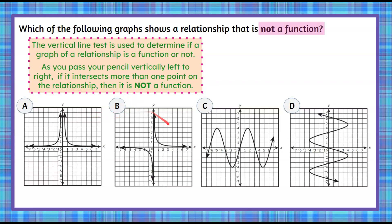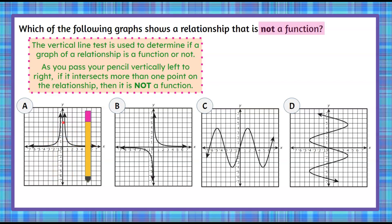Each one of these four graphs shows a relationship between x and y, and one of them is not a function. We're going to start with our pencil and pass it left to right — you can see it's passing through one point on the graph at a time. So this graph passes; this is a function.